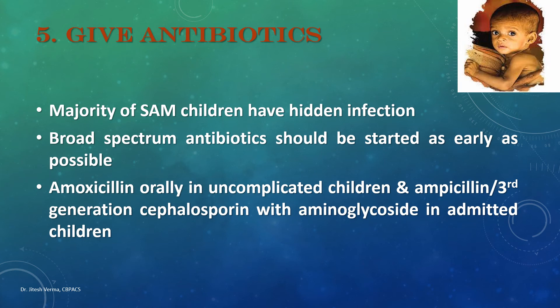All SAM children should be presumed to have hidden infections. Broad-spectrum antibiotics are started after blood culture. For uncomplicated admitted children, amoxicillin is preferable; for complicated cases, ampicillin with a third-generation cephalosporin and aminoglycosides (amikacin or gentamicin) is used. Antibiotic therapy is then guided by culture reports.